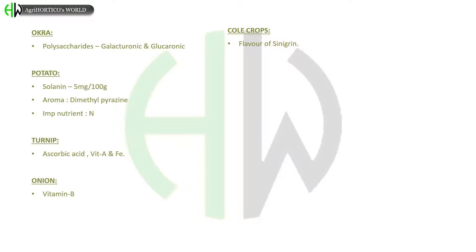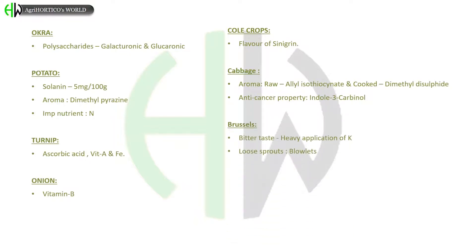In cabbage, aroma in raw cabbage is due to allyl isothiocyanate, and in cooked cabbage, aroma is due to dimethyl disulfide. It also contains anti-cancer property — that is indole-3-carbinol — which is an important objective. In Brussels sprouts, bitter taste is due to heavy application of potassium, whereas loose sprouts are called blowlits. It is important to know that the lutein-rich vegetable is kale. In broccoli, the anti-cancer property is sulforaphane.